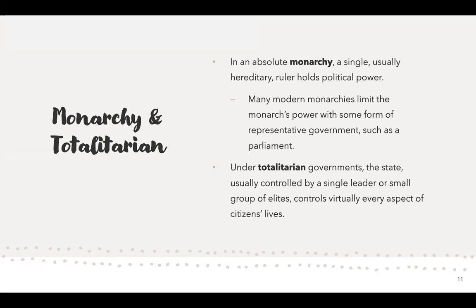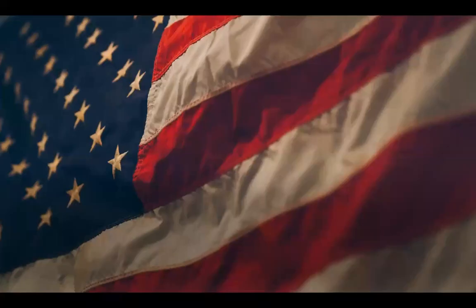In a monarchy, a single — usually hereditary — ruler holds political power. Many monarchies limit the monarch's power with a representative government such as parliament. England is the best example: King Charles became king after Queen Elizabeth died, and he holds political power, but England also has a parliament that helps run the actual government. Then you have totalitarian governments, where the state is controlled by a single leader or a small group of elites who control every aspect of citizens' lives. Iran is an example — they have a president and a council of elders who run everything, and there is no democracy there.